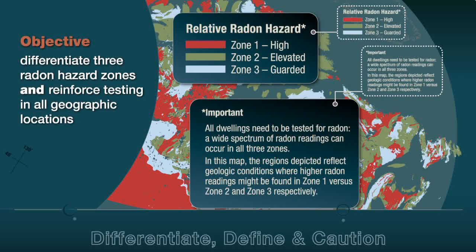The final step was to select messaging to accompany the map that would best illustrate radon as a national hazard, while reinforcing the need to test, regardless of zone. To accomplish this, we defined the risk in each zone as relative, leaving out references to predictive average readings, which can be misleading.